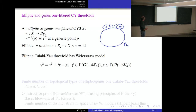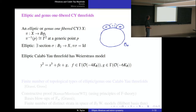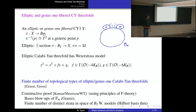A few things about elliptic and genus-one fibered Calabi-Yau threefolds: these are Calabi-Yau threefolds fibered over a base B2, with a projection π from the threefold to the base, where the inverse at a generic point is a T². If there's a global section, it's elliptic, and then there's a Weierstrass model — Weierstrass form where f and g are sections of O(−4K) and O(−6K). There's a theorem by Gross, following work by Antonella, proving there are a finite number of topological types of elliptic and genus-one Calabi-Yau threefolds.